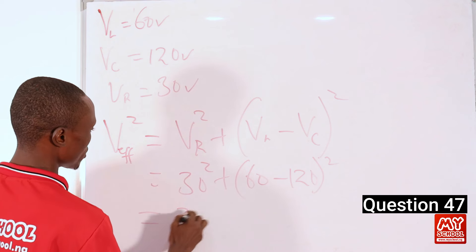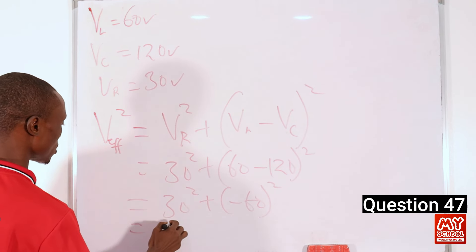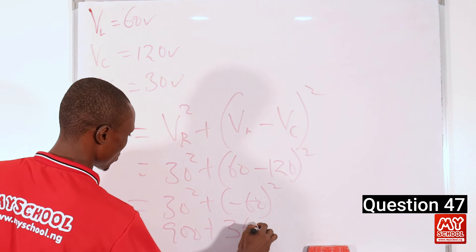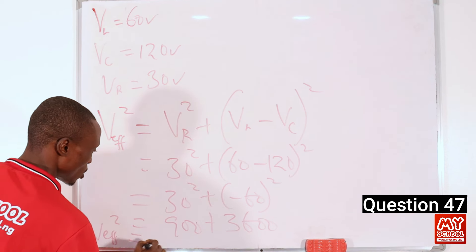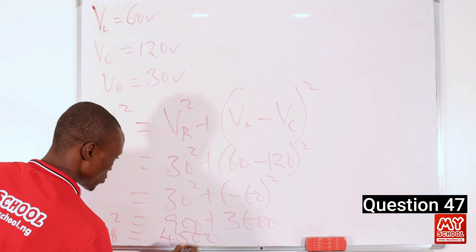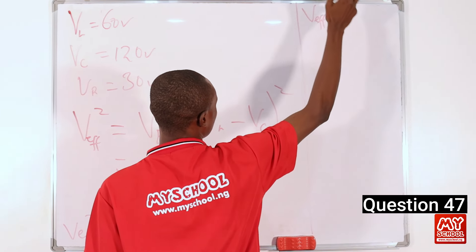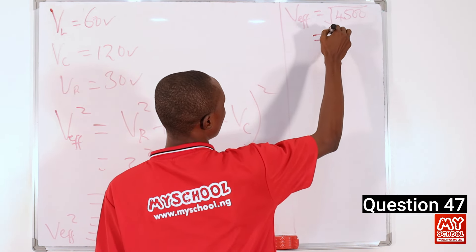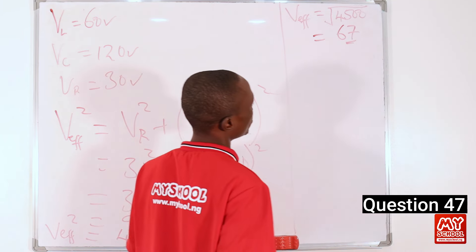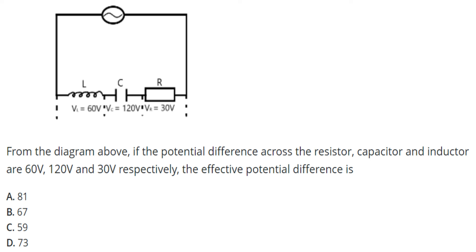Working this out: 30² equals 900, and (−60)² equals 3600. So V_eff² equals 4500. Taking the square root of both sides, V_eff equals the square root of 4500, which is approximately 67 volts. From our calculation the effective potential difference is 67, so that makes option B the correct option.